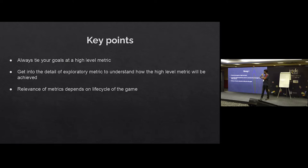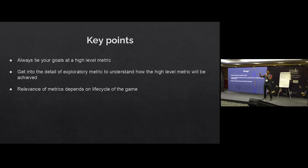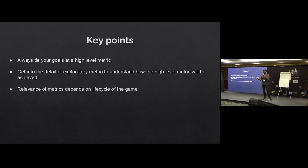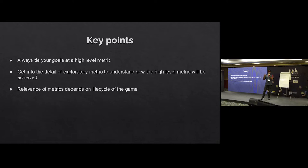You need to tie your goals to the high level metrics — generally DAU, ARPDAU, etc. When things go bad, you get into the exploratory metrics. The metrics relevance depends on the life stage of where your game is. Maybe you won't focus on monetization as soon as you launch. What is the order in which you start looking at metrics? You don't look at all metrics together all the time — you take them one at a time. You have a fixed team and fixed energy, so you need to be very clear about where to focus.